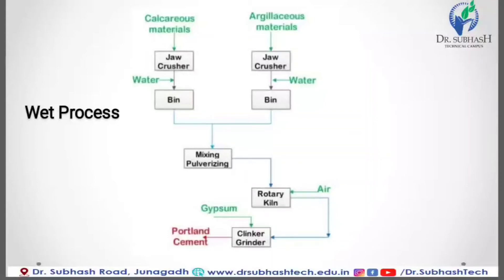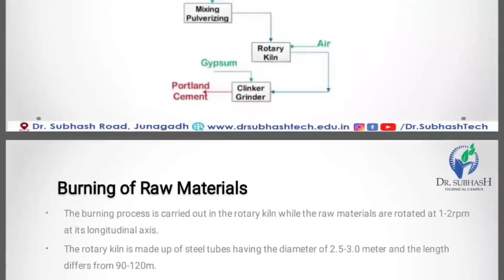After the grinding process — which can be done in a ball or tube mill, or even both — the slurry is laid into a collecting basin where its composition can be adjusted. There is a mixing and pulverizing option where the slurry composition can be adjusted. The slurry contains around 38 to 40 percent water, and is stored in a storage tank and kept ready for the rotary kiln. This completes the first stage.